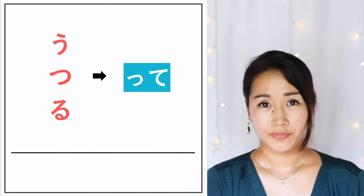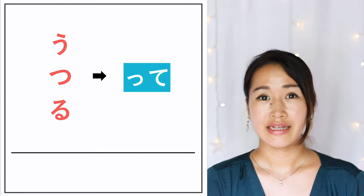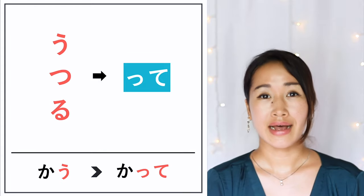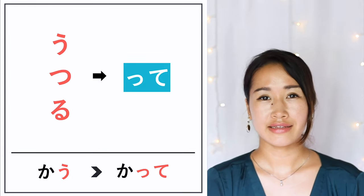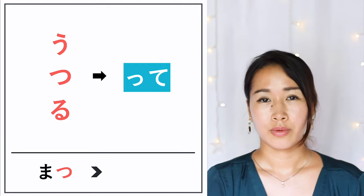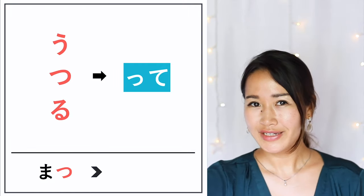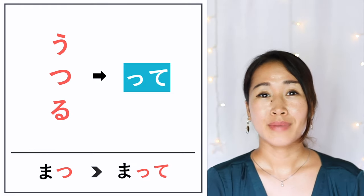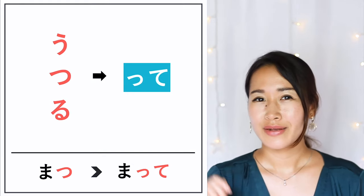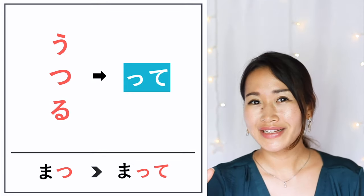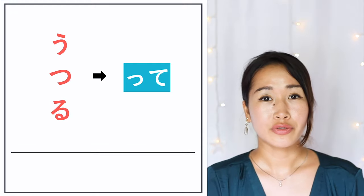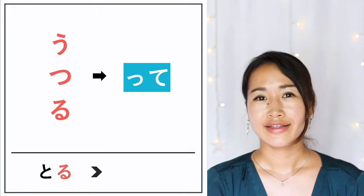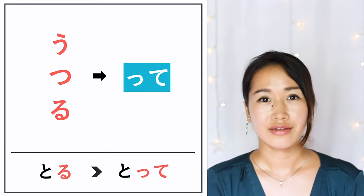For example, 'to buy' is 'kau', and the TEFORM of kau is 'katte'. How about 'matu' (to wait)? The TEFORM is 'matte'. If you want to say 'wait a second', you can say 'chotto matte'. How about 'toru' (to take)? The TEFORM is 'totte'.